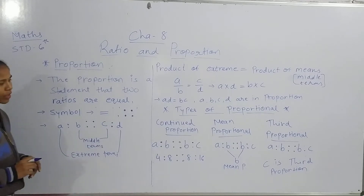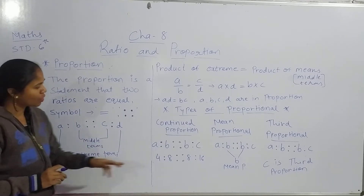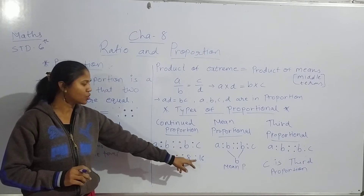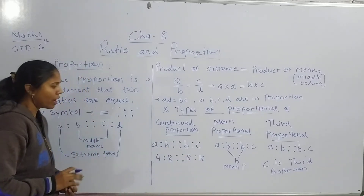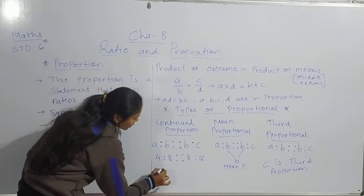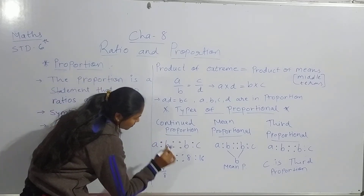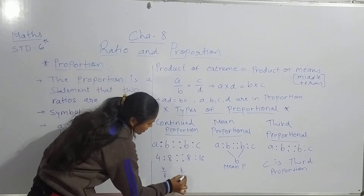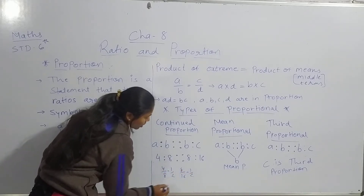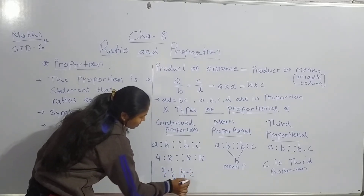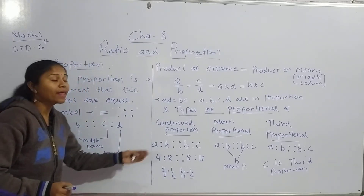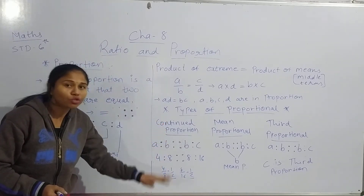Now friends, look at here: 4 is to 8 and 8 is to 16. Are they equal? Let us check. 4 upon 8 and 8 upon 16 is equal to 1 upon 2 and 1 upon 2. The answer is 1 upon 2 and 1 upon 2 — so they are equal. So they are in proportion.